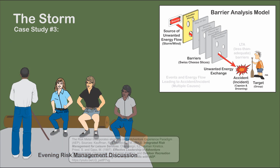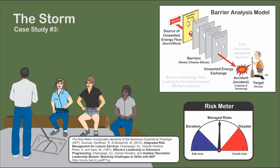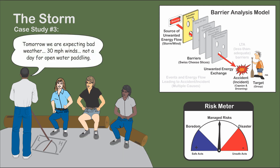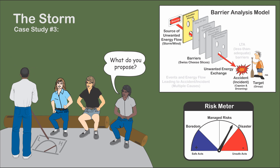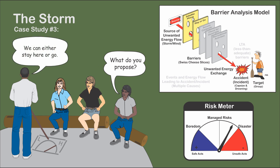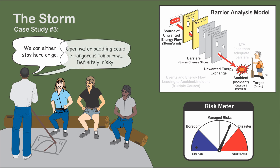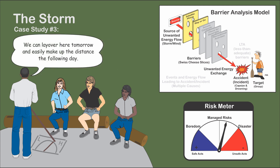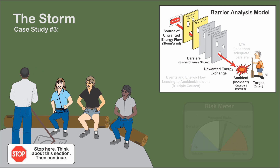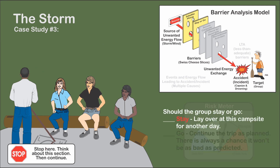That evening, the leader had a risk management group discussion. He sketched a risk meter on the ground and suggested that with the coming storm, the potential risks were pretty high — moving the needle to the right. The group agreed. What could they do to lower the risks? Should they stay or go? The trip tomorrow was a dog leg across the lake, and the following day back across again to a point a mile further up the shore. The current site was well-sheltered from the elements. They could stay at this campsite tomorrow and easily make up the extra mile the following day. In your opinion, tomorrow should they stay or go?